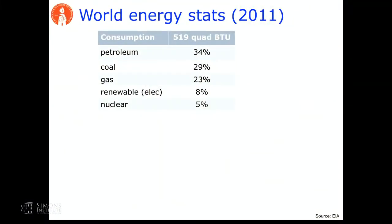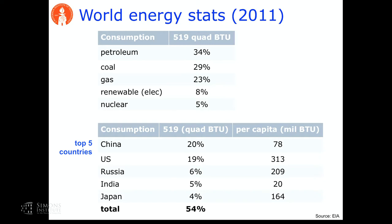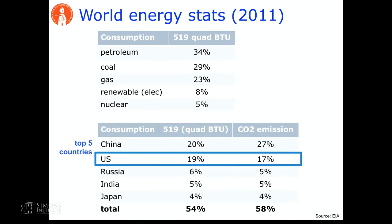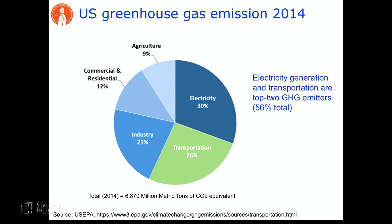Looking globally, the world today — or as of 2011 — still mostly depends on fossil energy for all forms of energy. The largest five countries in terms of consumption are China, US, Russia, India, Japan. If you look at per capita, it's different. The five largest countries consume more than half of all energy and also emit the most greenhouse gas CO2 emissions, more than half. Zooming into the US: electricity generation and transportation generate more than half of all greenhouse gases in the US, and they consume two-thirds of energy.